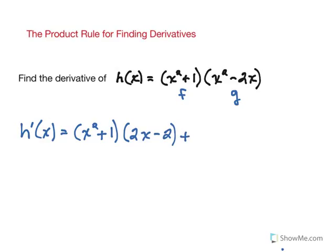Now it's always a plus. Now we keep the second function, the x squared minus 2x. And we need to multiply now by the derivative of the first function, of the f function. That's the x squared plus 1. And according to the power rule, that would be 2x.